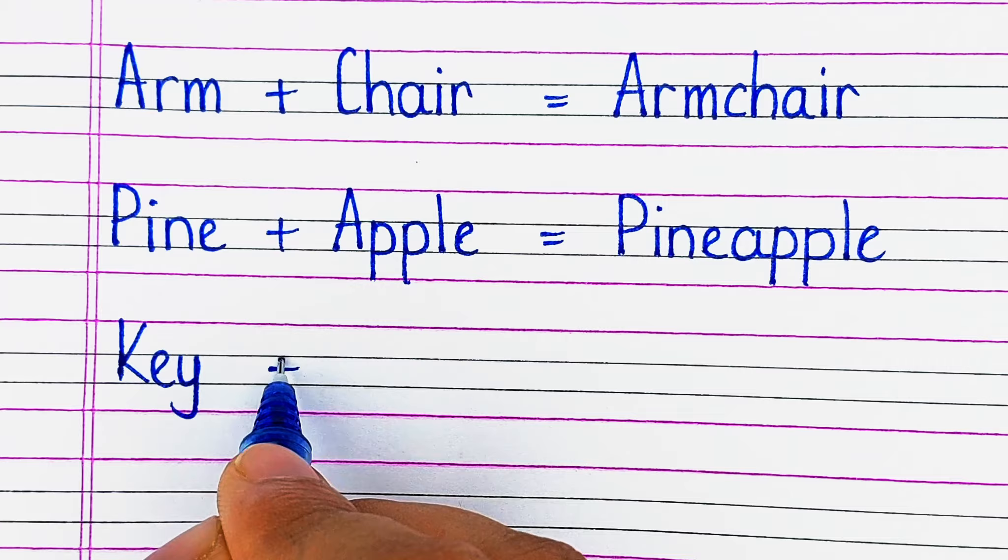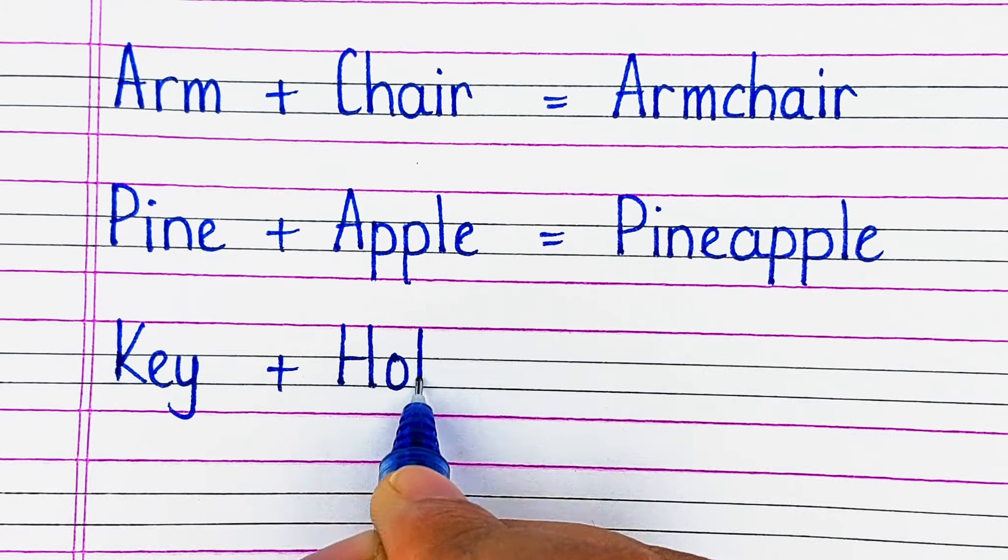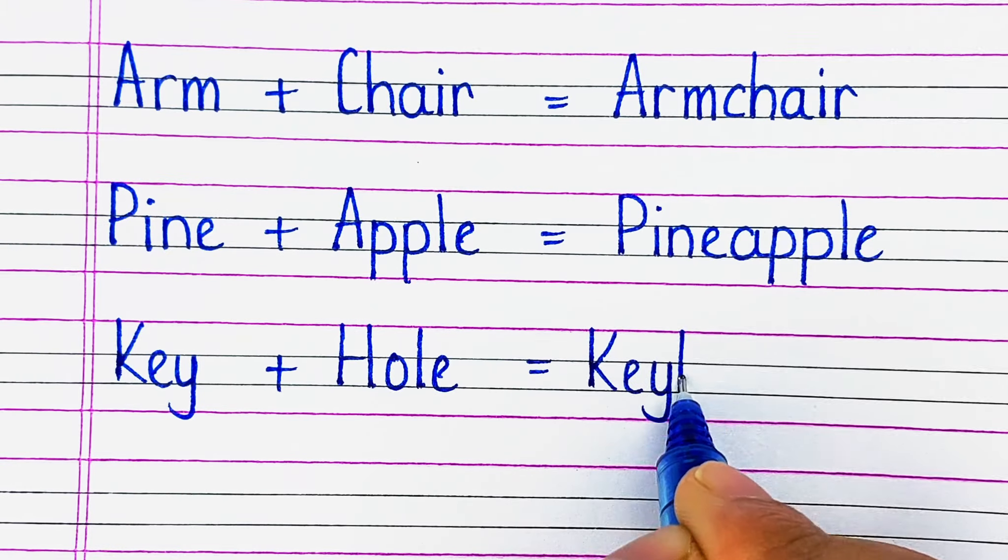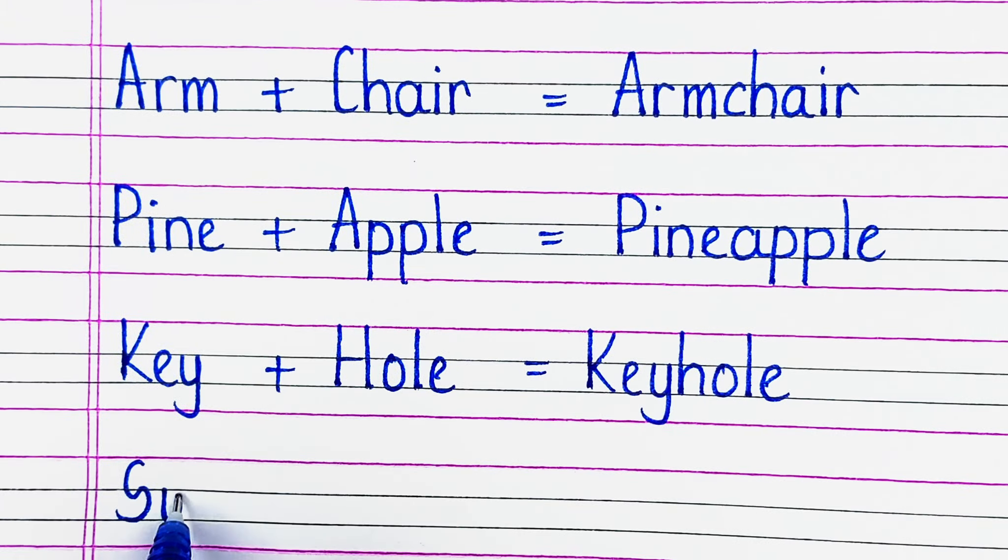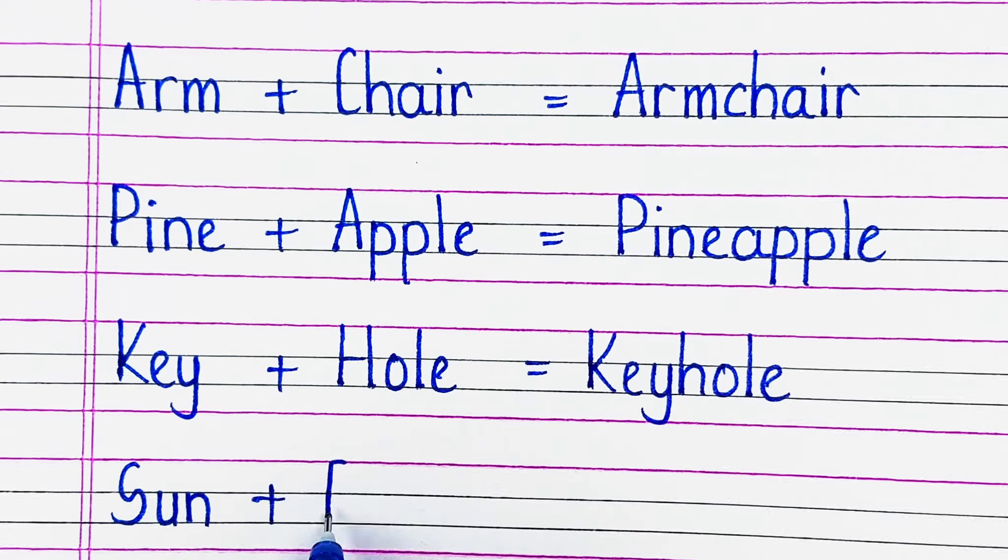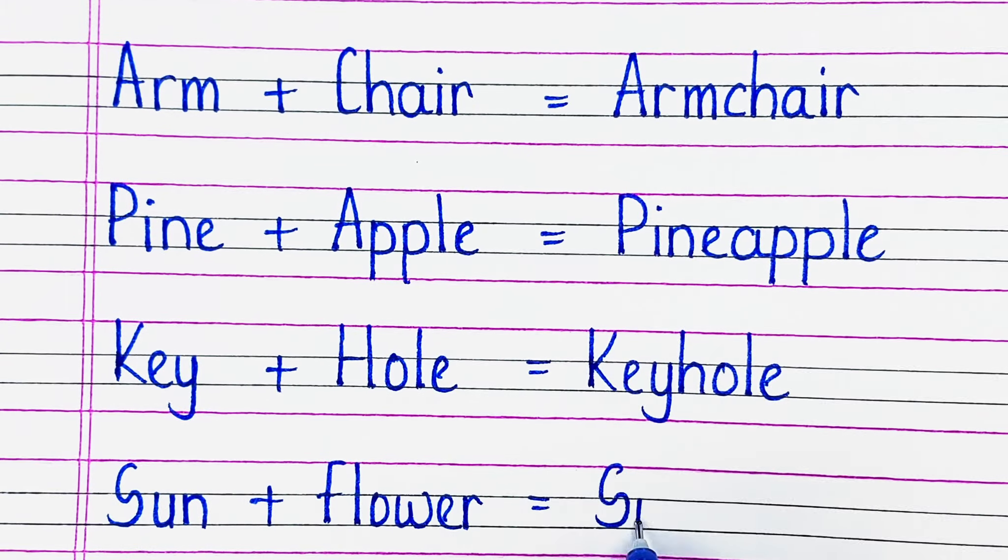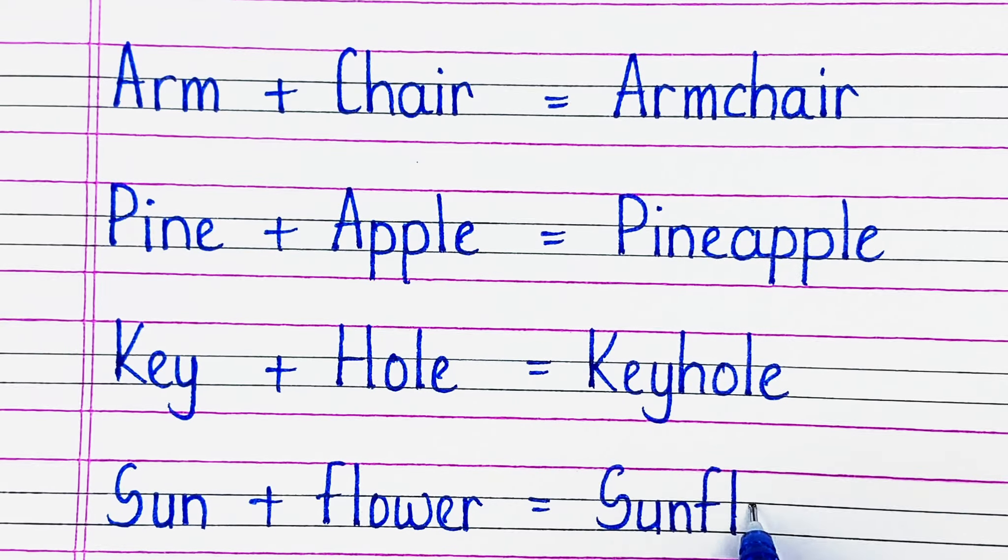Next word is K-E-Y key plus H-O-L-E hole, keyhole. Next word is S-U-N sun plus F-L-O-W-E-R flower, sunflower.